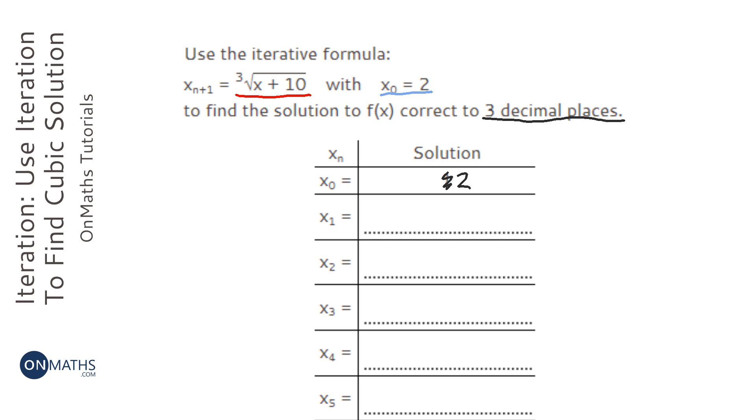and then type in ans plus 10. What that's asking the calculator to do is to use the thing we've stored in memory and add 10 to it. You might be thinking, why don't you just type in 2 plus 10? Well, it is quicker for the first one, but not for subsequent ones, because